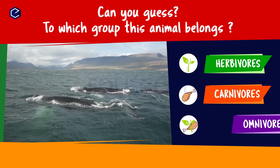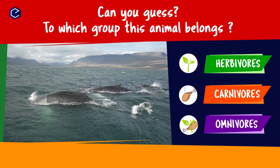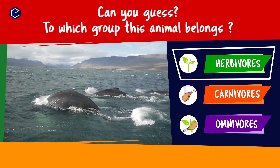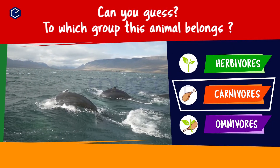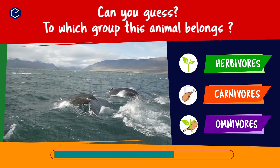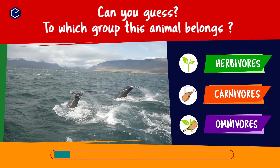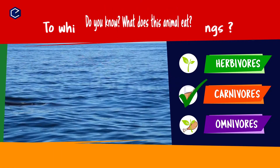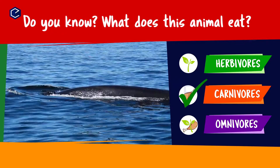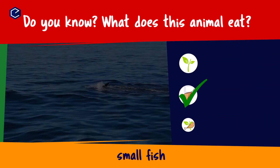Can you guess to which group this animal belongs? Herbivores, carnivores, omnivores. Do you know what this animal eats? A whale eats small fish. So whale is a carnivore.